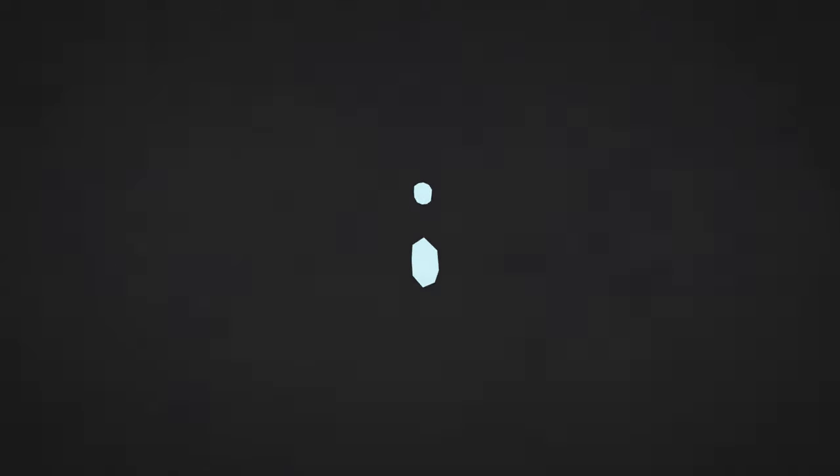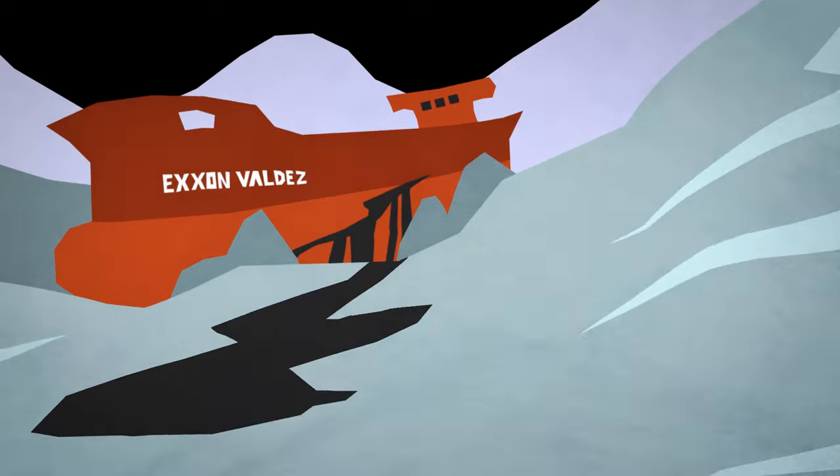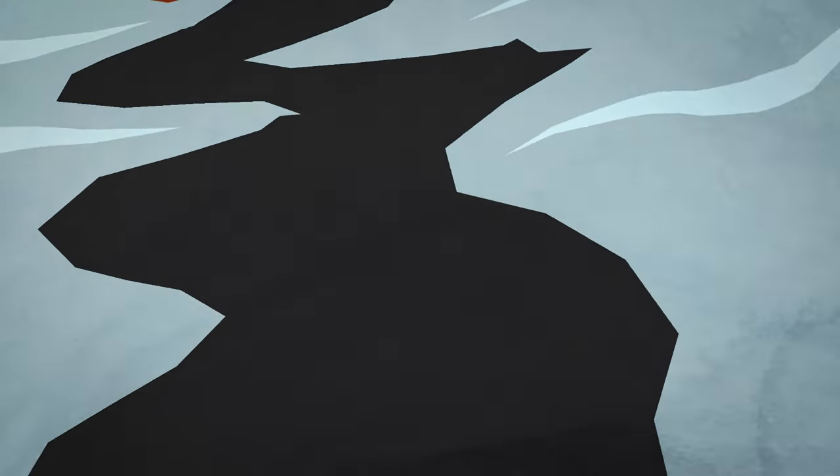That's always been the question. It was 1989. The Exxon Valdez oil tanker ruptures in Alaska. It's one of the biggest environmental disasters of all time.